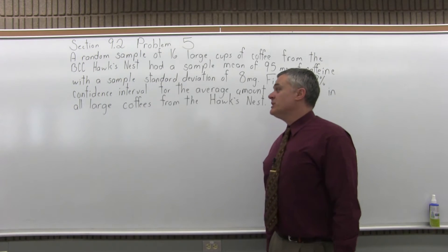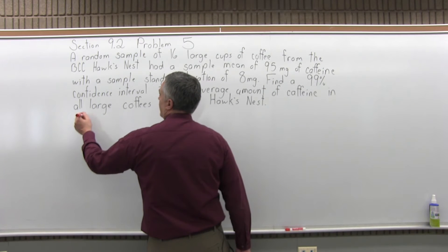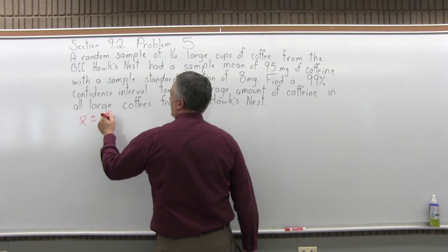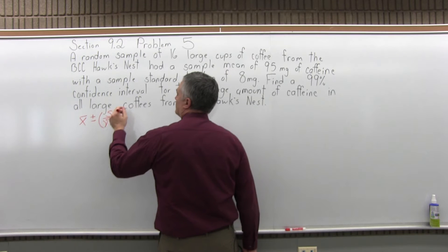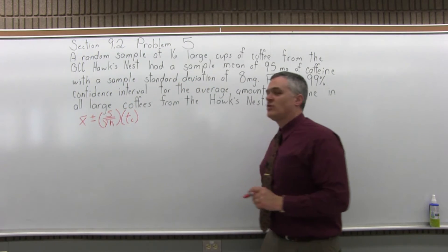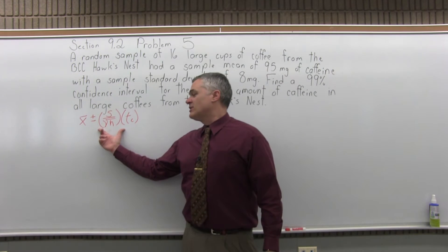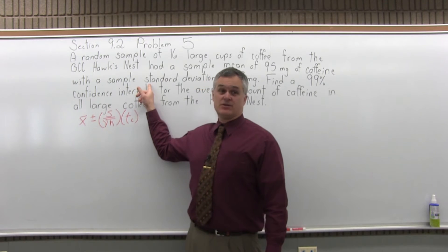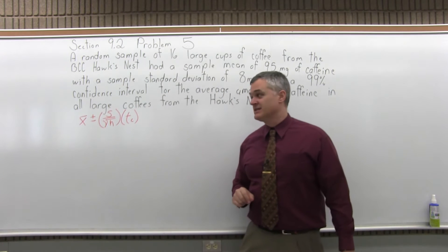So the formula we need to use for this problem is x̄ plus or minus s over square root of n times t sub c. There are two confidence interval formulas for a population mean. The one I have on the board here is the one you use when you do not know the population standard deviation, which we don't. We know the sample standard deviation, which is a more realistic case.